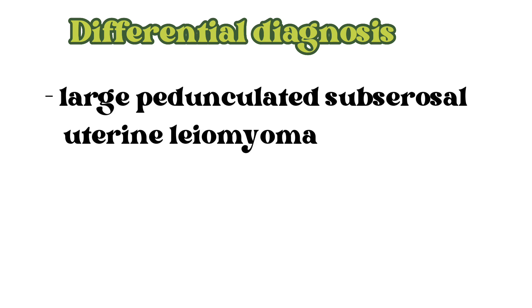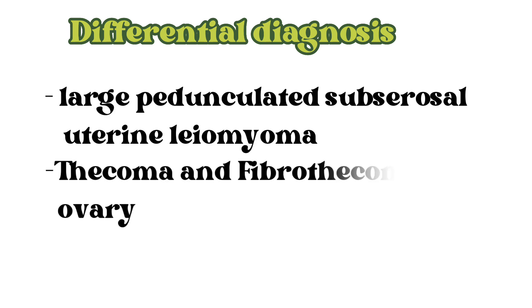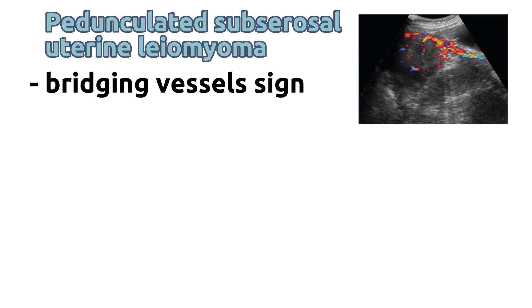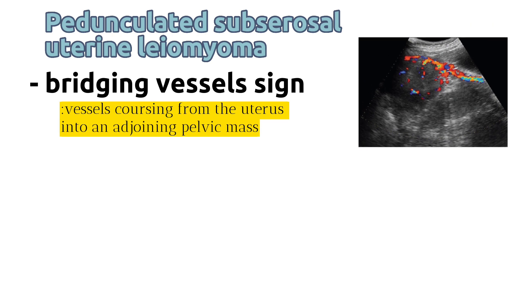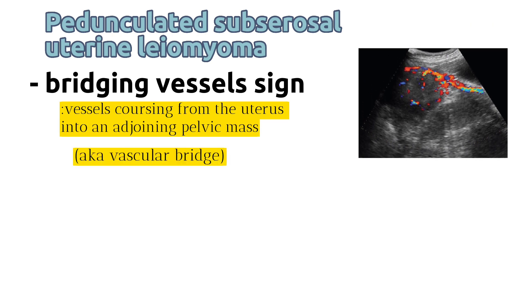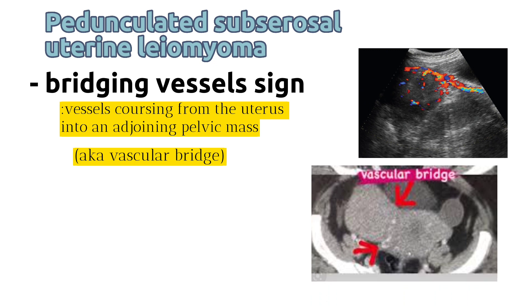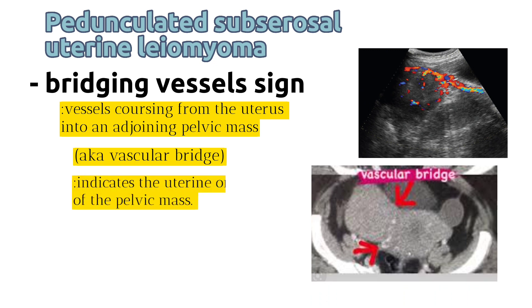Differential diagnosis of fibromas includes large pedunculated subserosal uterine leiomyoma, and thecoma, and fibrothecoma of the ovary. Pedunculated subserosal uterine leiomyoma shows the bridging vessel sign, which is the appearance of vessels coursing from the uterus into an adjoining pelvic mass, also known as a vascular bridge. This sign helps to differentiate a pedunculated subserosal uterine leiomyoma from other juxtauterine masses of ovarian, adnexal, or bowel origin.